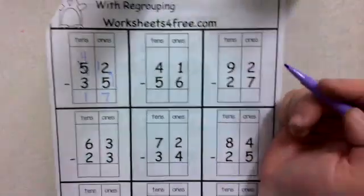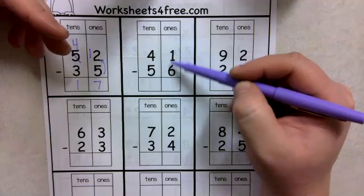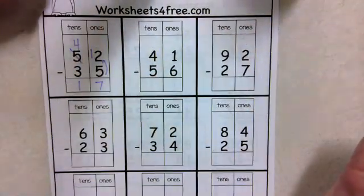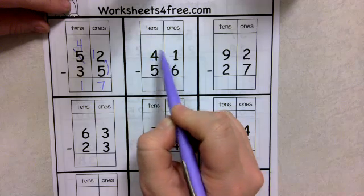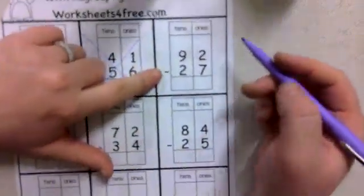I'll just walk through one more with you. Here, same thing, 1 minus 6. Can't do it, because if I had one pencil, I couldn't give you 6 pencils. I need to borrow from the 4. Oh, this one doesn't work, because it's larger on top, so we're going to skip that one from the packet. Let's look at this one instead.